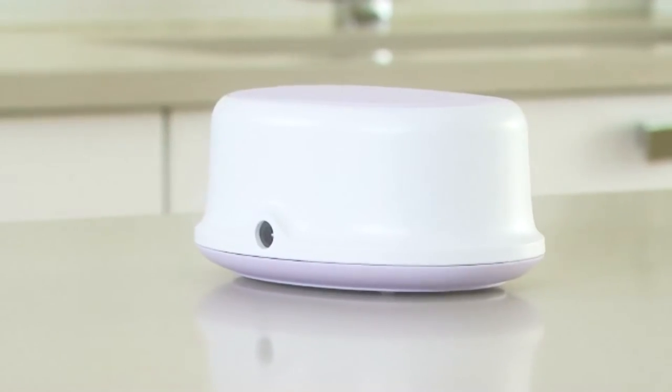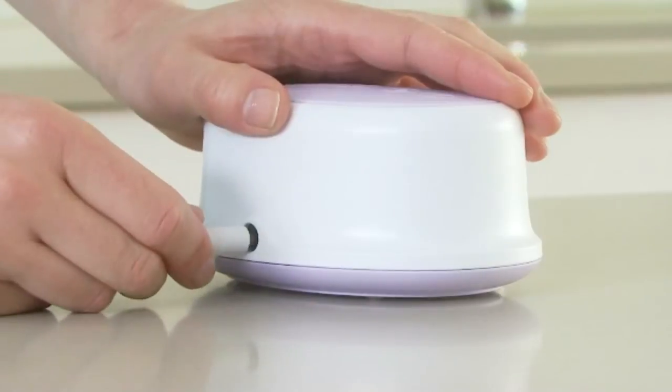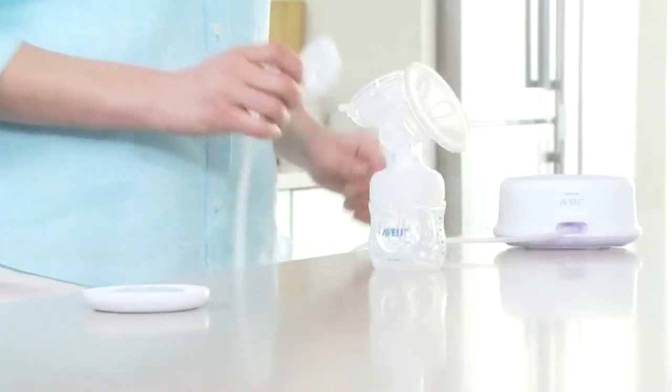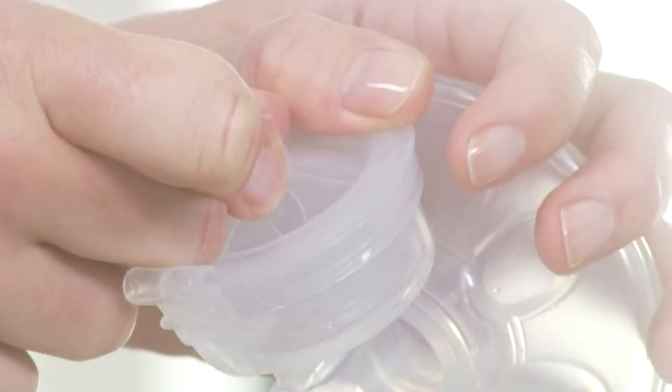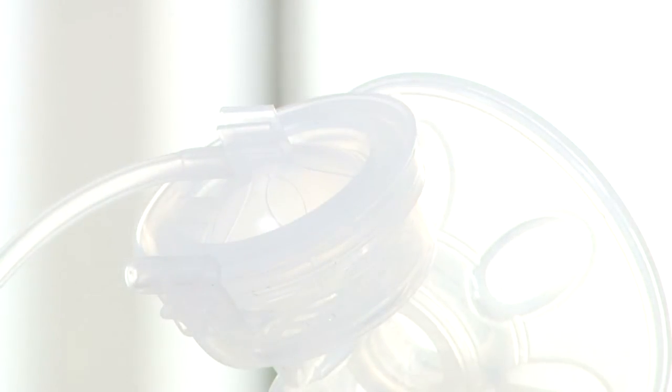Insert the adapter into the wall socket and insert the other end into the base unit. Attach the silicon tube and cap onto the diaphragm. Push the cap down until it is securely in place.